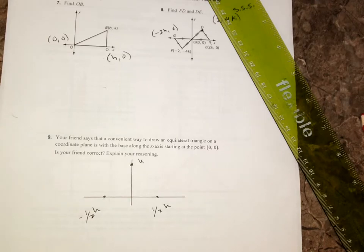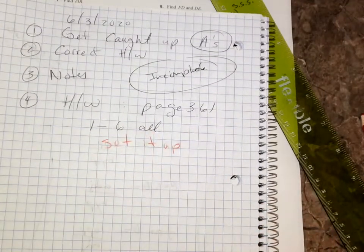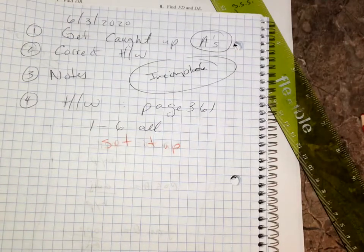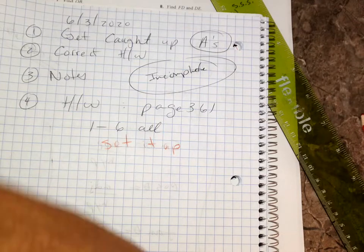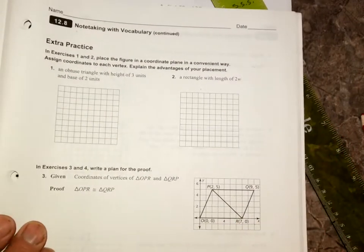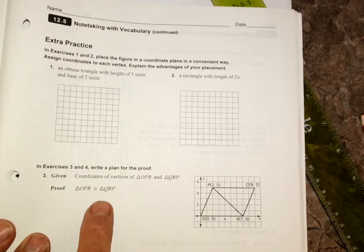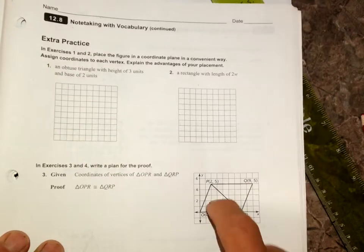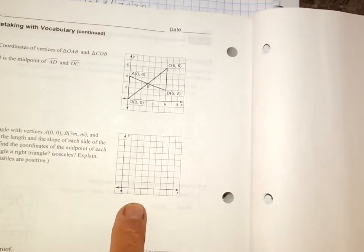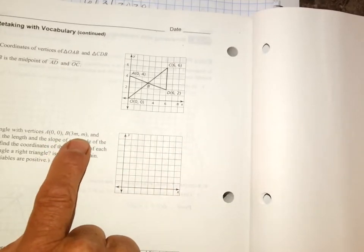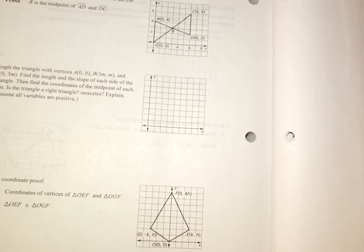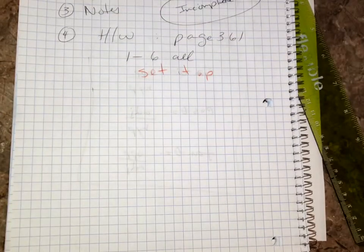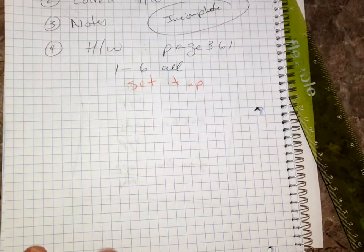So, homework. You ready? Page 361. One through six all. This is our last homework out of the book. So you can burn your book if you want to after this. When it says do a proof, all I need you to do is just set it up. Write a plan for a proof. You don't have to do a proof. Just write a plan. What would you do to say that's equal to that? Five is easy. Just draw it on here using M, whatever M is. And on this one, just come up with a plan for a proof. I will talk to you tomorrow. If you have any questions, go ahead and text me. Send me your homework. We're doing great. We're almost done.